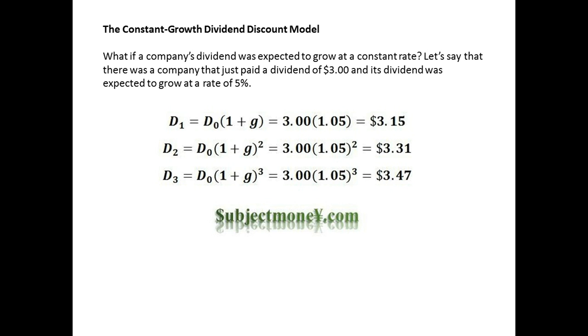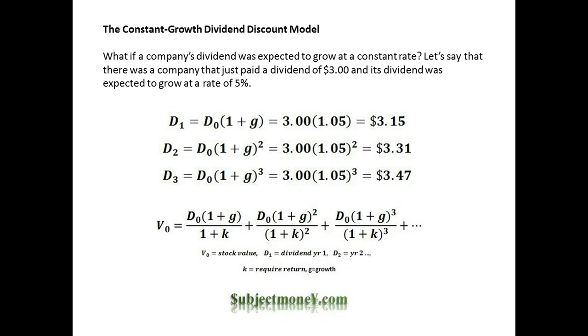We would have to keep solving for each year's dividend at the growth rate and then discount them by the discount rate. The Constant Growth Dividend Discount Model can be simplified as shown here.